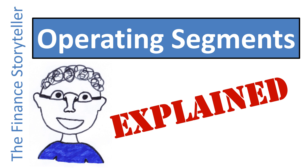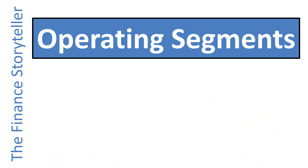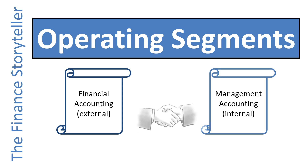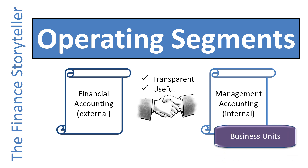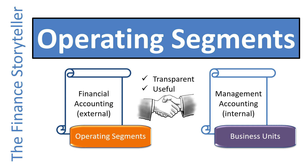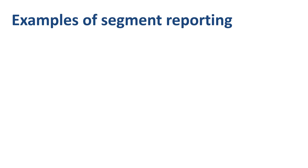When you analyze the financial results of a company, operating segment information can be very insightful. This is where financial accounting and management accounting meet, where the external reporting largely aligns with the internal reporting. It's an opportunity for a company to provide transparent, useful information to investors. What a company might call a business unit or division internally is called an operating segment or reportable segment in external reporting. Let's go through some real-world examples of segment reporting before we dive into the accounting principles and rules that regulate it.